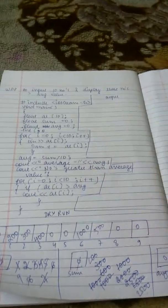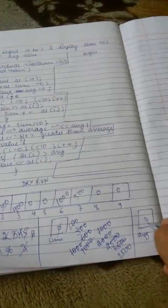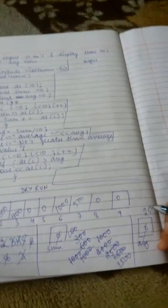Average is sum divided by 10. Sum is 2500 divided by 10 is 250. Initially our value was 0, now it will become 250.